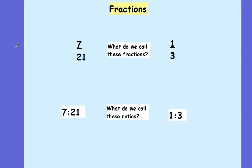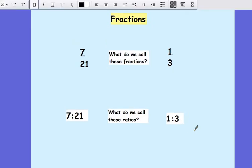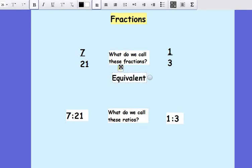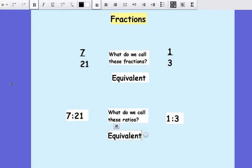So here's my question, Year 8. What do we call these types of fractions, 7 over 21 and 1 third? Therefore, what do you think we call these types of ratios? There's a special word for it, and it begins with E. Can anyone tell me what it might be? Violet, what do you reckon it is? Equivalent ratio is perfect. We call these types of fractions equivalent fractions, and we call these types of ratios equivalent ratios, in exactly the same way.